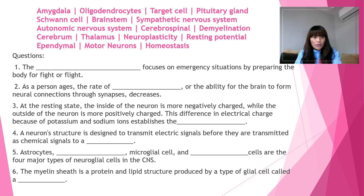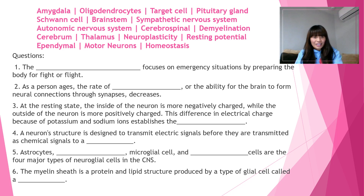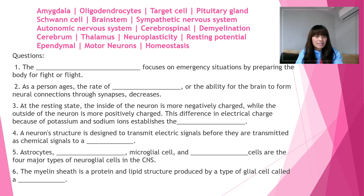Number four: a neuron structure is designed to transmit electric signals before they are transmitted as chemical signals to a blank. Look around the word bank and take a guess. The answer for number four is target cell — a neuron structure is designed to transmit electric signals before they are transmitted as chemical signals to a target cell.